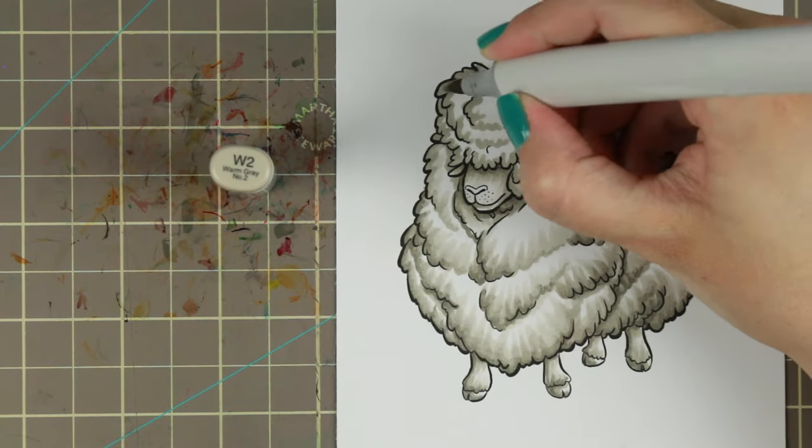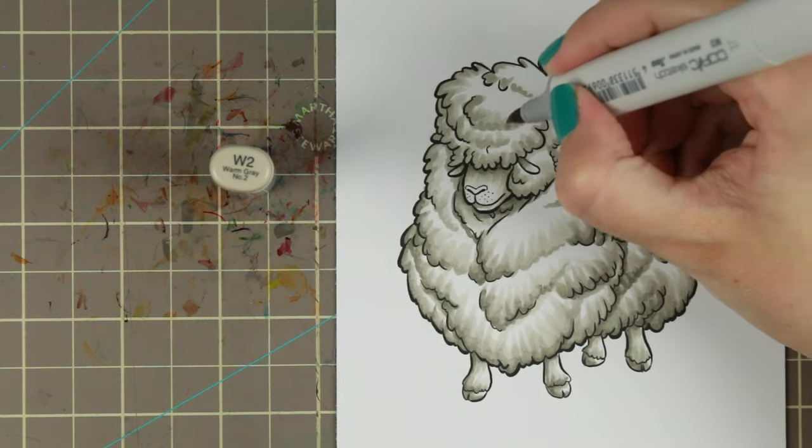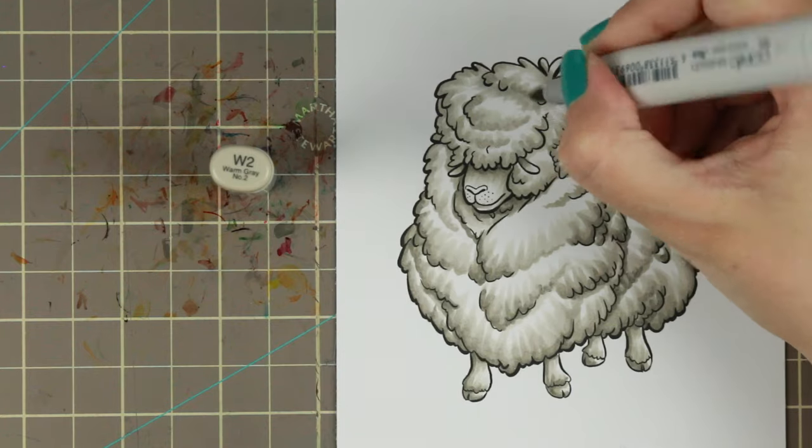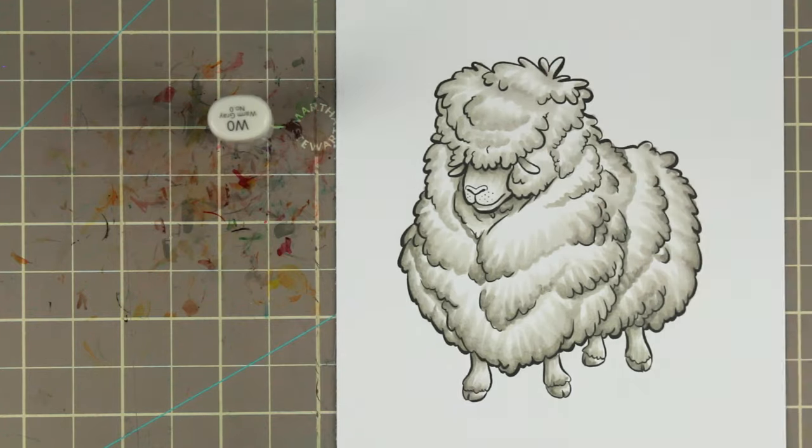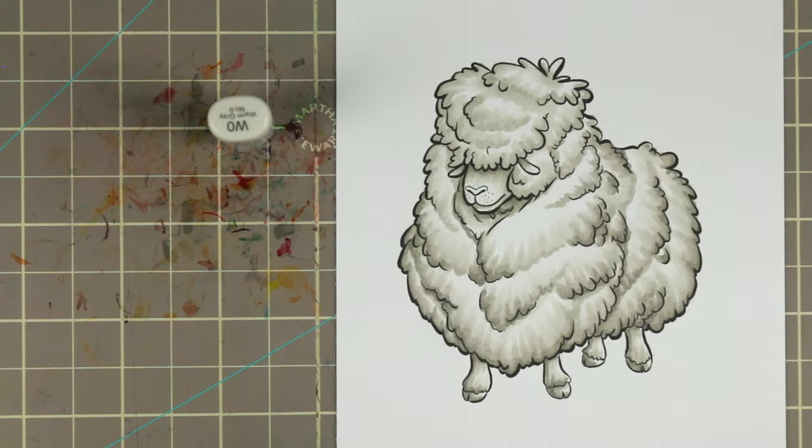So I didn't know how to color this sheep because all the sheep I see here in Sweden are very small. So I went to my best friend Google and I did some Google searches and I found sheep that actually look like this. Who knew that sheep actually could look like this?